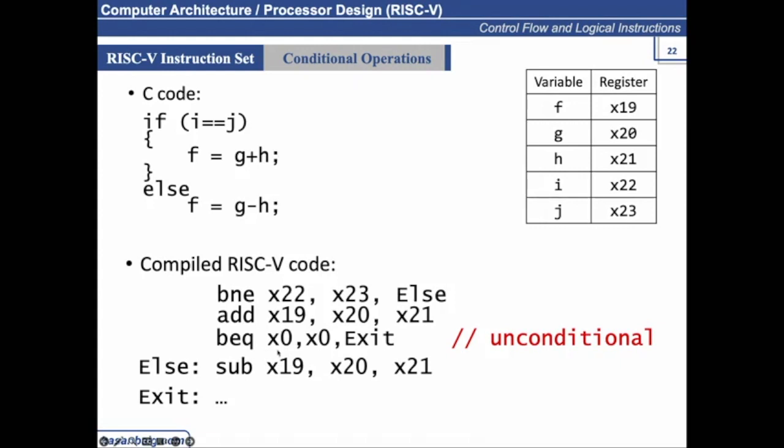For BEQ x0, x0: take a branch only if the contents of x0 and x0 are equal, which will always be equal — always 0 and 0. So it will always take the branch and jump to exit. That's why we flip it in the pseudo code.